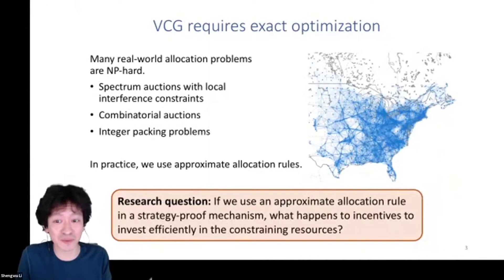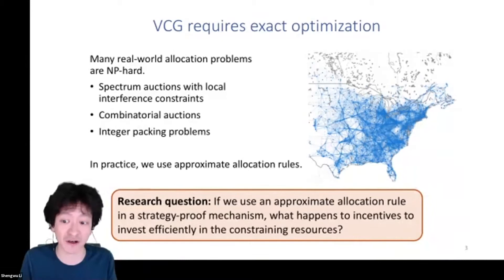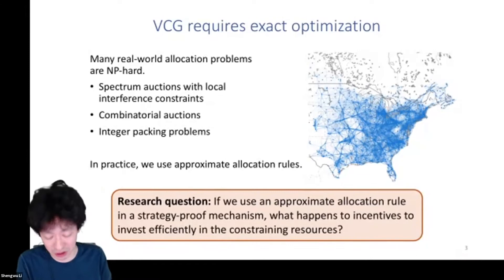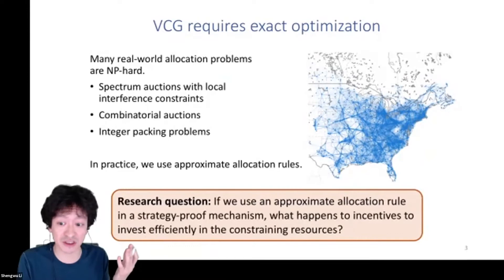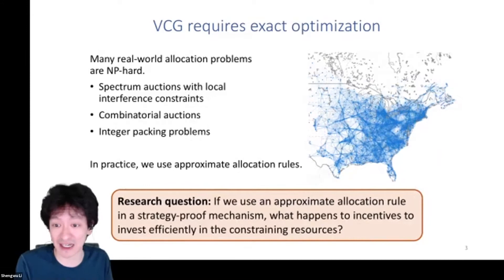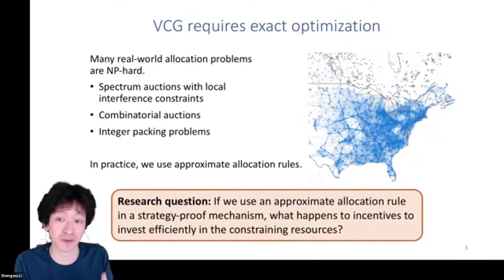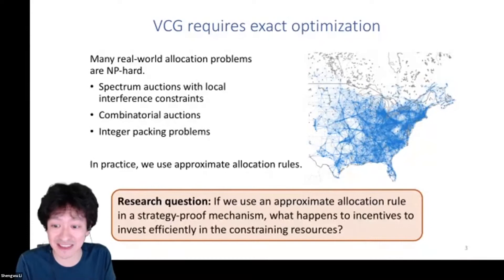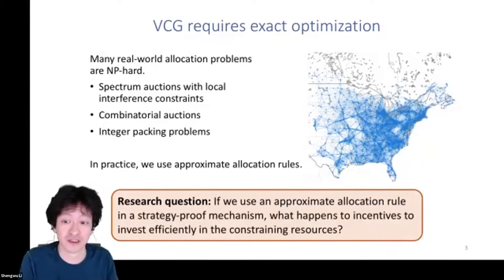So why is this a problem? Many real-world allocation problems are NP-hard — it's computationally hard for the auctioneer to compute the optimal allocation. Spectrum auctions with local interference constraints can be NP-hard to solve optimally, as can combinatorial auctions even under complete information. There are also a variety of integer packing problems with non-convexities where it's NP-hard to figure out who should get the good.